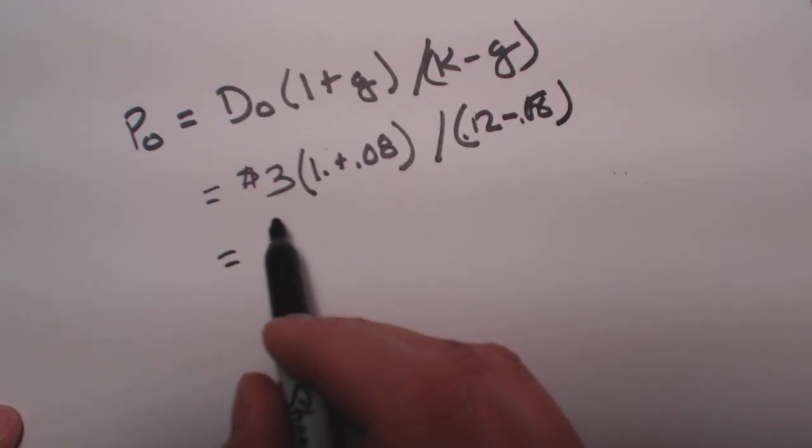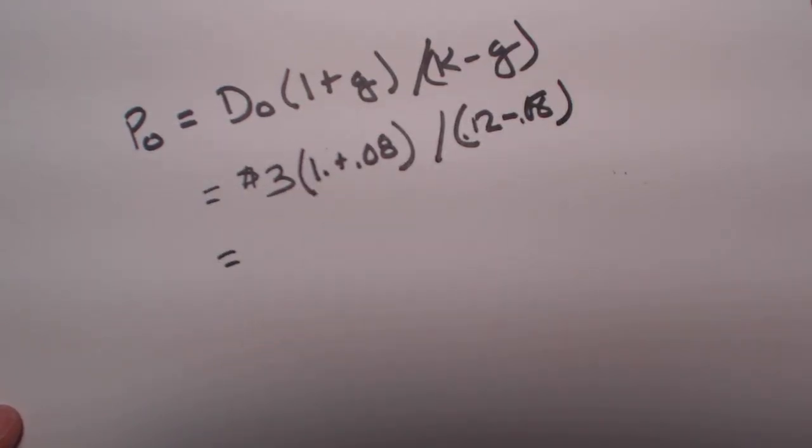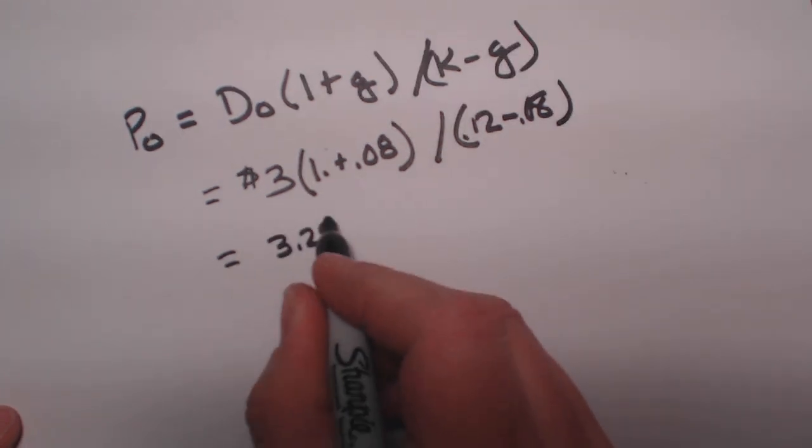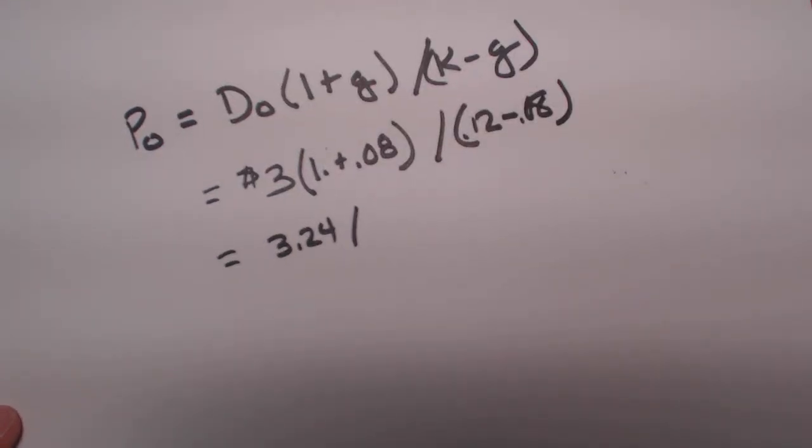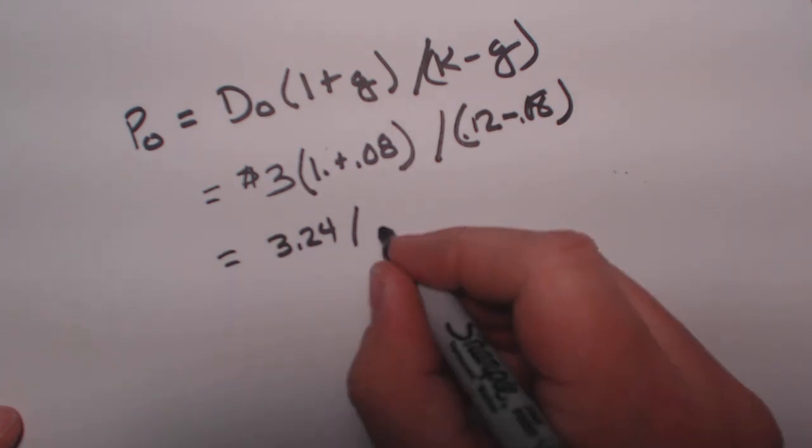So then we multiply 3 times 1.08, and that equals $3.24, divided by 0.12 minus 0.08, which equals 0.04.